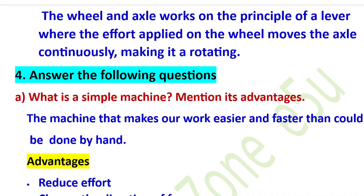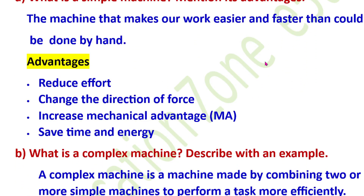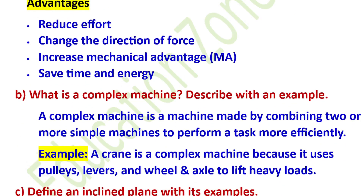Question: what is a simple machine? Mention its advantages. A simple machine is a machine that makes our work easier and faster than could be done by hand. Its advantages: simple machine reduces the effort, changes the direction of force, increases the mechanical advantage, and saves time and energy.